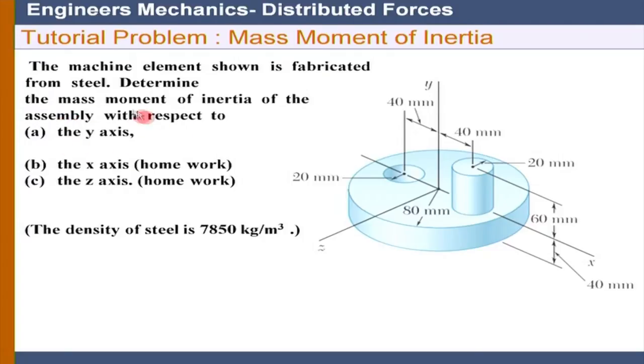So I just need the result for the y axis for the time being, and the x and z axis we can do as a normal homework exercise. So there is a cut out here, 20 mm radius. That cut out is there and we have a cylinder here connected.